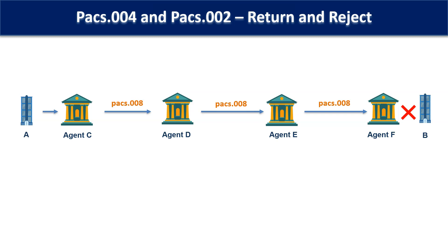In such a case, agent F will use the PAG002 message with the status code RJCT, which stands for reject. Remember that in this case, agent F did not do any settlement of the payment in its books before rejecting the payment. But when the payment is going back, agent E had already settled the payment in its books earlier.